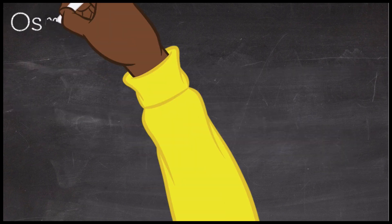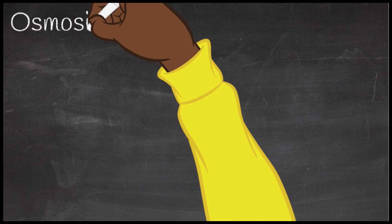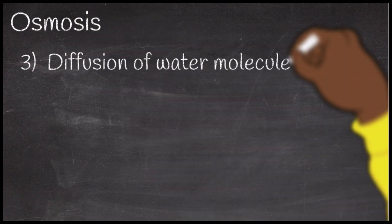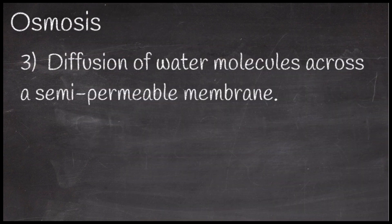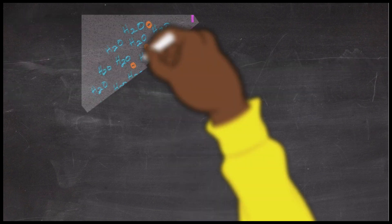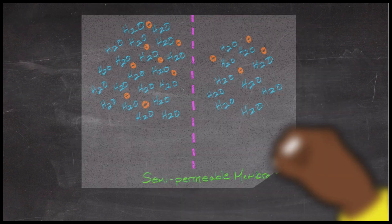I think the single best definition of osmosis is the diffusion of water molecules across a semi-permeable membrane. And that semi-permeable membrane is pretty significant. So let's take a look at some slides to illustrate this.